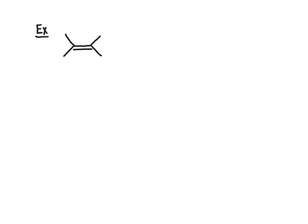As our example problem, we're going to start with just a generic carbon-carbon double bond — specifically 2,3-dimethyl-2-butene — and react it with osmium tetroxide, OsO4, in the presence of peroxide, H2O2. What we would predict to result from this reaction is the addition of a hydroxy group to each of the two carbons of the carbon-carbon double bond. In other words, we're going to add an OH group to each of those two carbons.